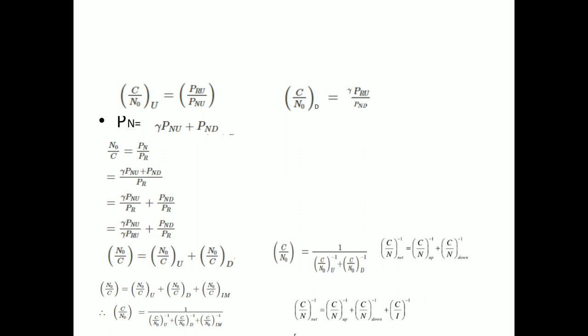Writing the expression: PN is gamma times PNU plus PND, divided by PR which is gamma times PRU. In the first term, gamma cancels, giving PNU by PRU, which is nothing but N/C of the uplink. We know that PR is gamma times PRU, so the gamma in the first term cancels and we get PNU by PRU — which is N/C of the uplink.